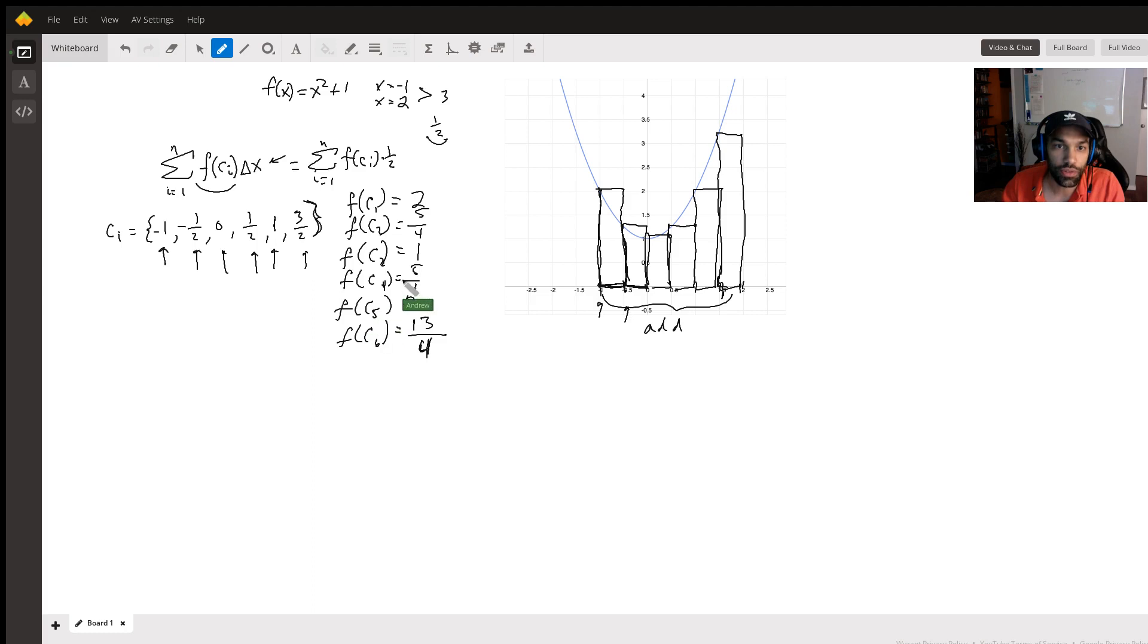Alrighty then. So these are the values here for ci. Now we have to multiply each of those by one half. And when we do that, we get one. And once we do that, we're going to add each of those up. So we have one, and then half times that is five over eight. Half times that is one half. And then five over eight. And then one. And then 13 over eight.